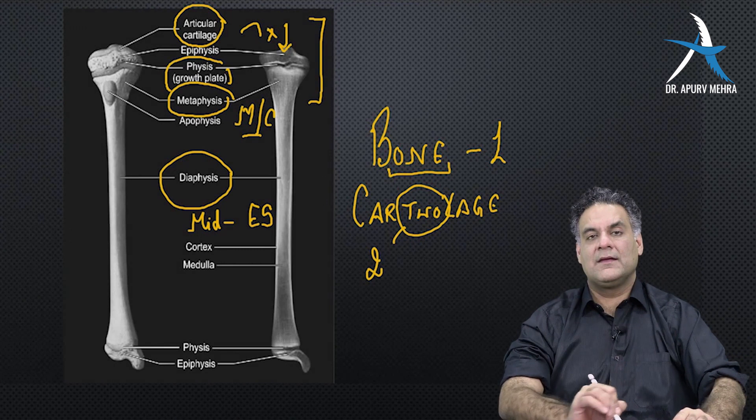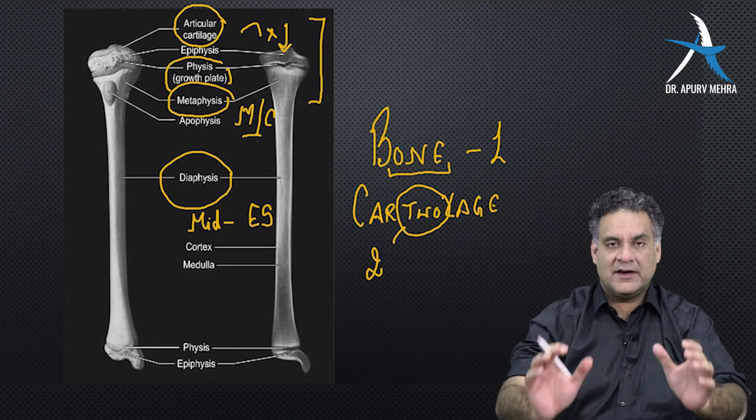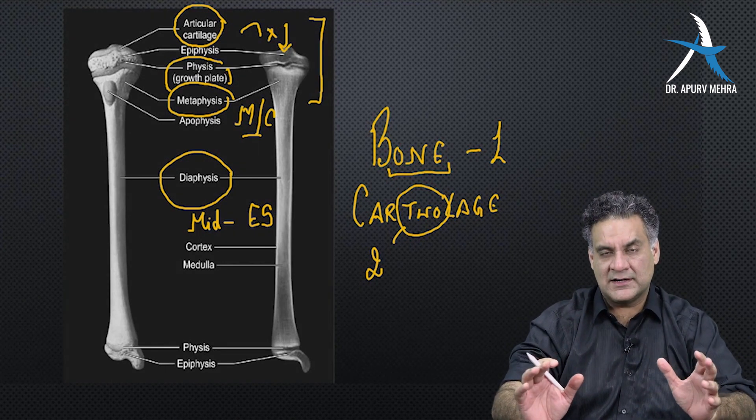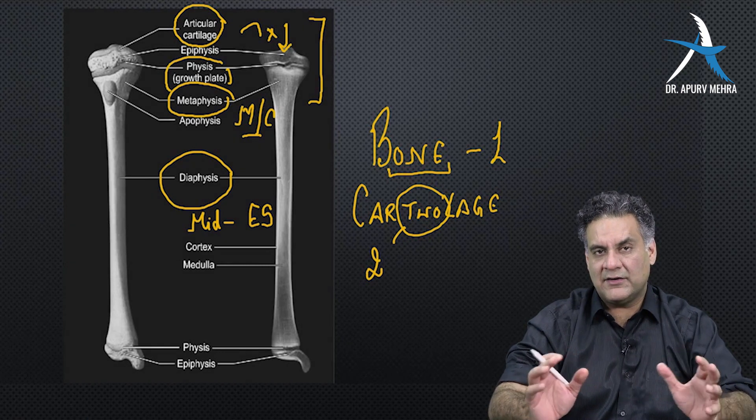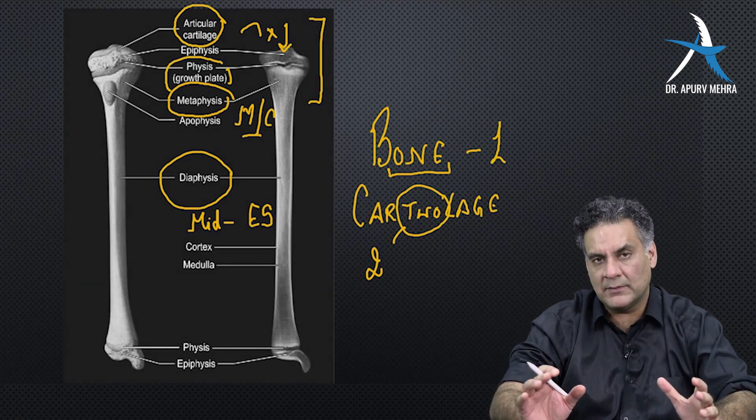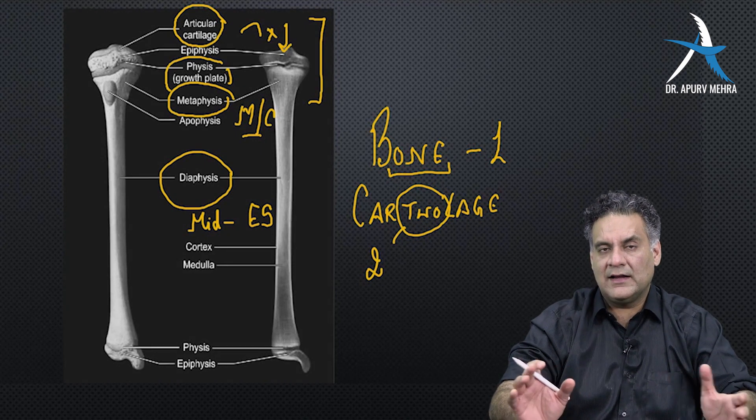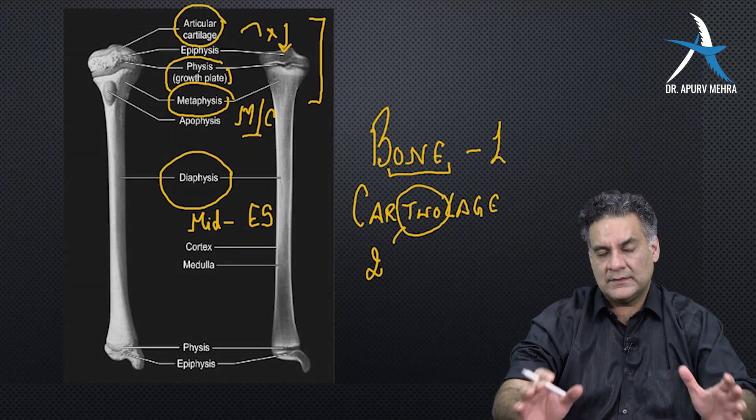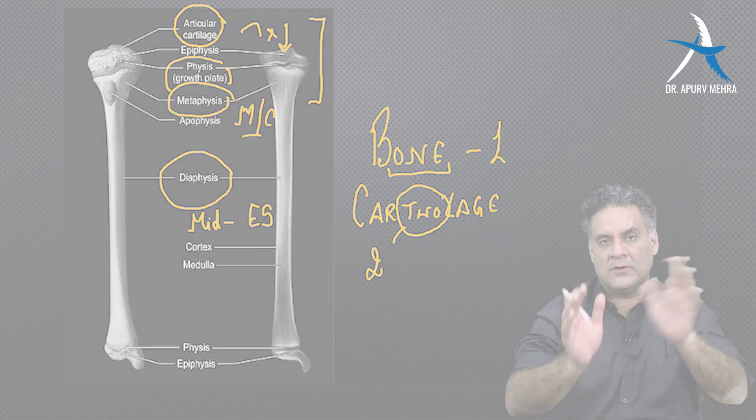So metaphysis, most common area for infections and tumors. Diaphysis, made of bone, Ewing sarcoma. Cartilage is not seen on x-rays. That's how you compare bone on x-rays.